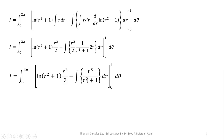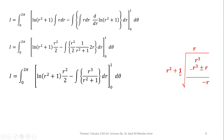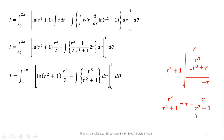In the second term, please note that the power of the numerator is higher than the denominator in the fraction R cubed over (R squared plus 1), so we first perform long division. We divide R cubed by R squared plus 1: multiplying R squared by R gives R cubed plus R; changing signs cancels R cubed, leaving minus R. So R cubed over (R squared plus 1) equals R minus R over (R squared plus 1).